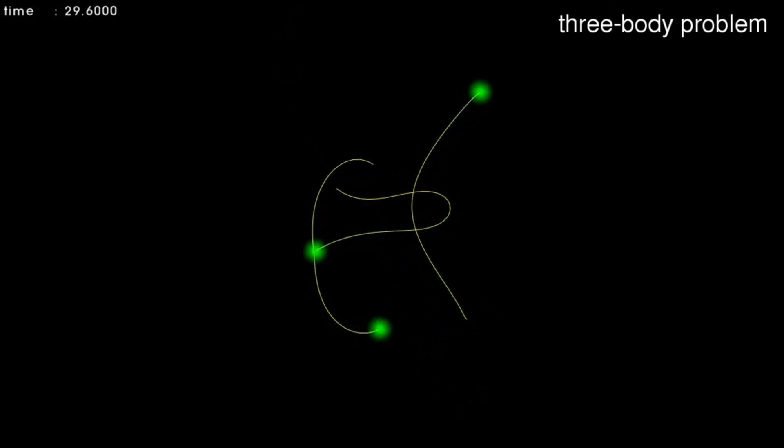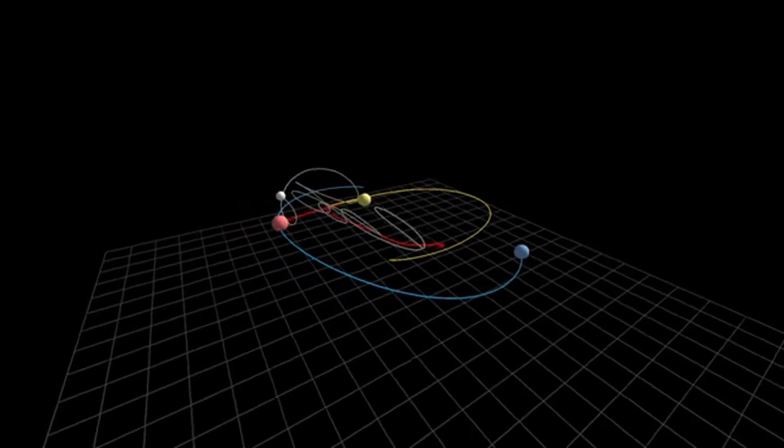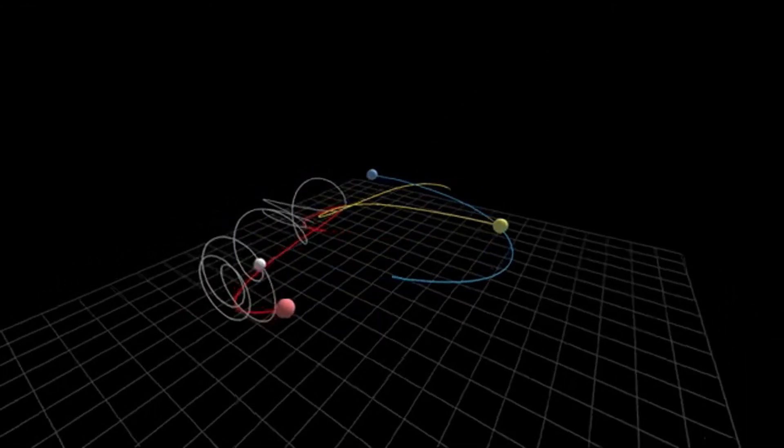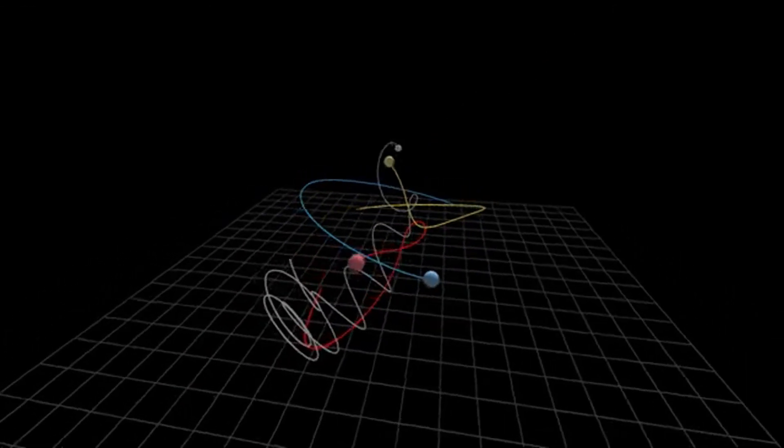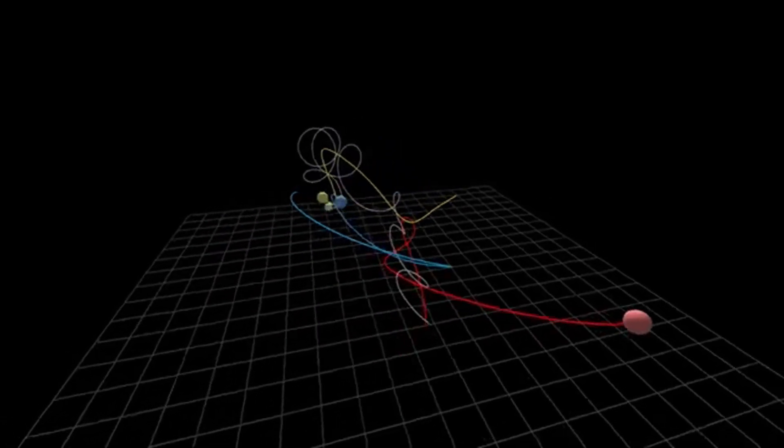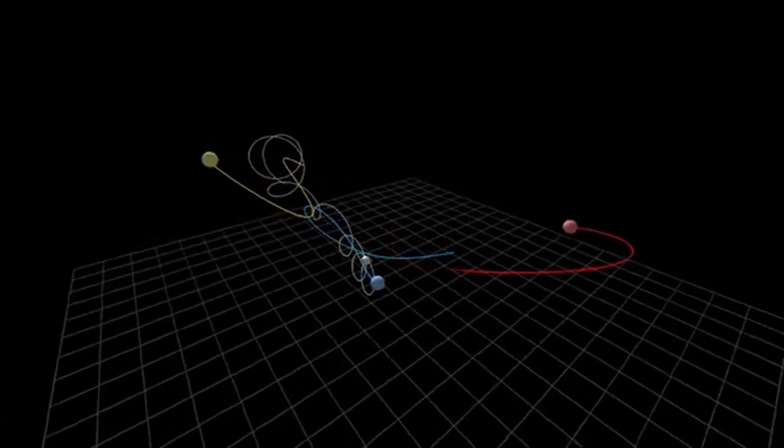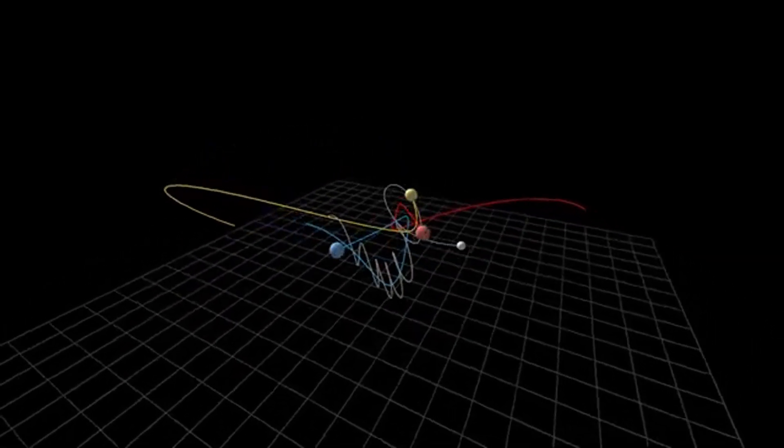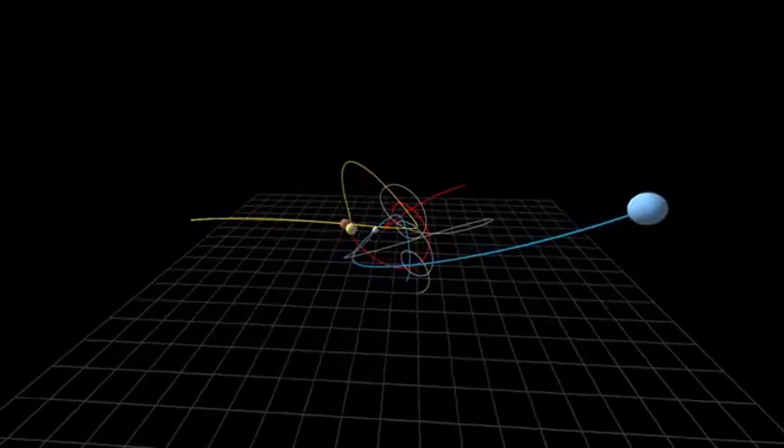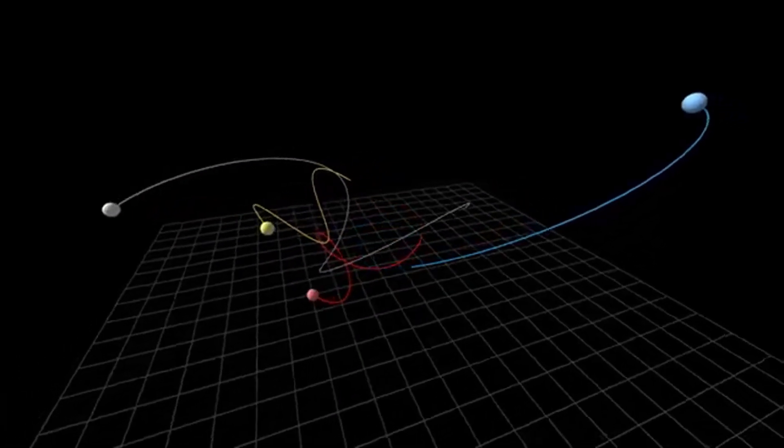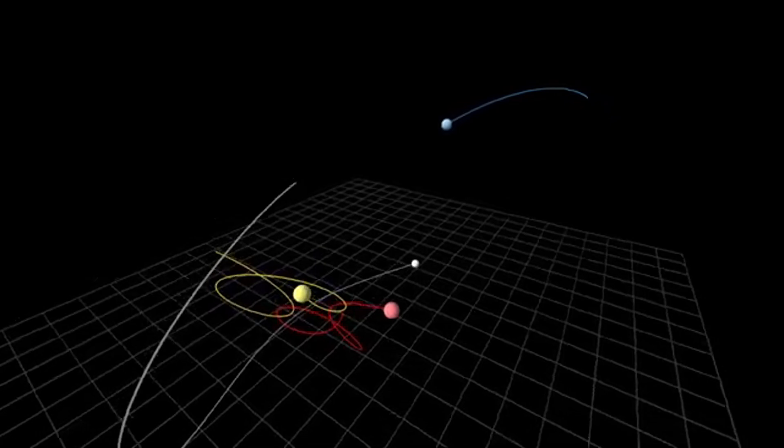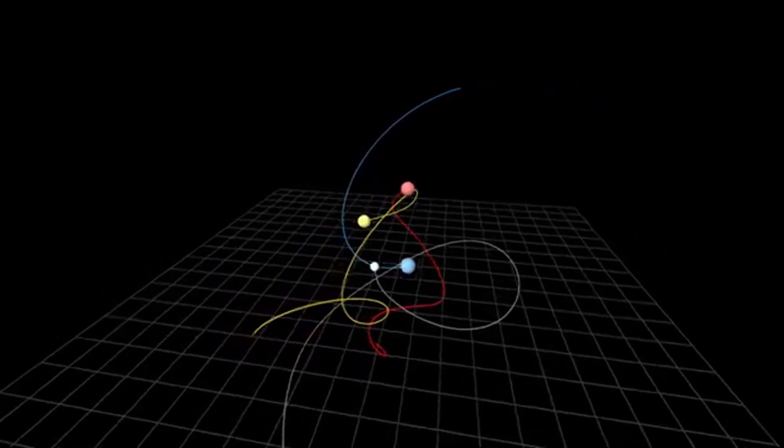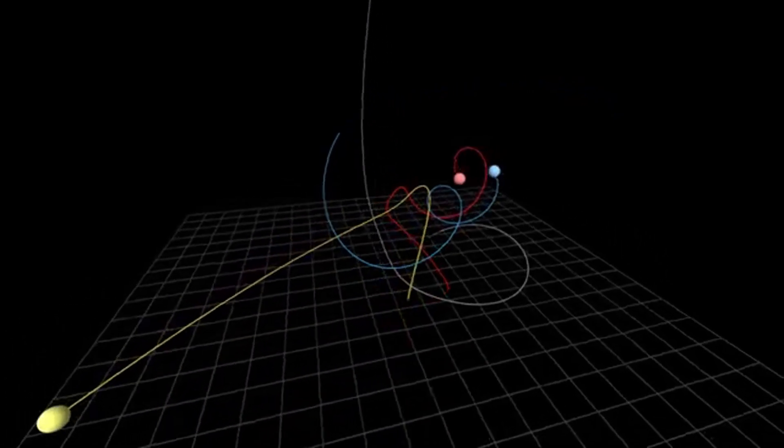Thus, even the three-body problem, let alone systems with four, five, or fifty bodies, has no analytical solution. That is, we do not have a solution in the form of an equation consisting of sums, multiplications, logarithms, exponentiations, etc., into which all parameters of the system can be substituted to predict its behavior in the future. We only have computer simulations.